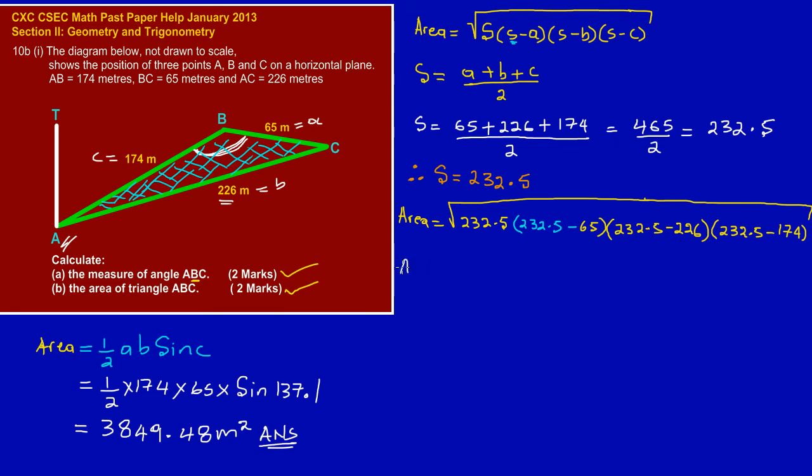We have area is equal to the square root, and let's just simplify. We have 232.5 open bracket, multiplied by 232.5 minus 65, and that should leave us with 167.5, close bracket. Let me just put this in a bracket to show that all of this is multiplying each other. Then we have another open bracket, and we have 232.5 minus 226, and that should leave us with 6.5, close bracket.